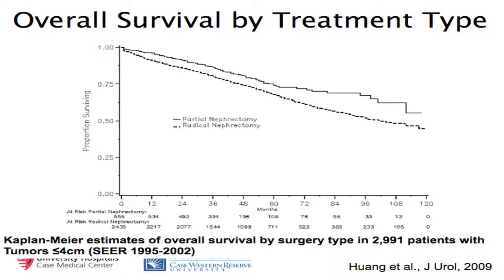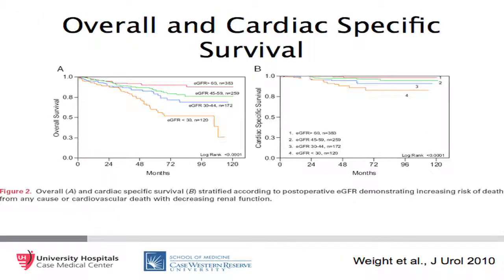Retrospective studies comparing partial to radical nephrectomy using SEER Medicare data have demonstrated a survival advantage for partial nephrectomy, hypothesized to be due to better renal functional preservation and resulting decreased cardiovascular morbidity. There is a direct relationship between postoperative GFR and overall survival, such that lower postoperative GFR corresponds to lower overall survival as well as lower cardiac-specific survival.